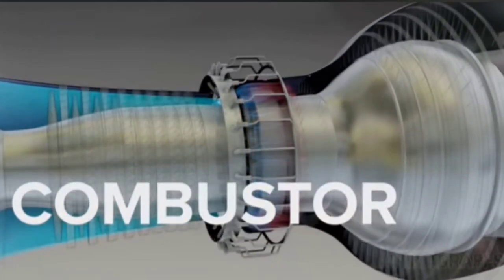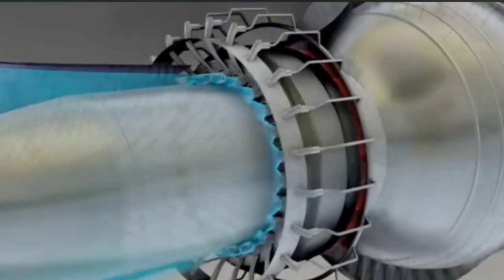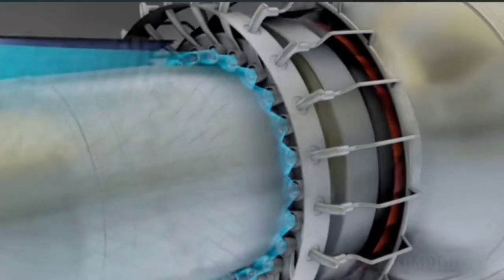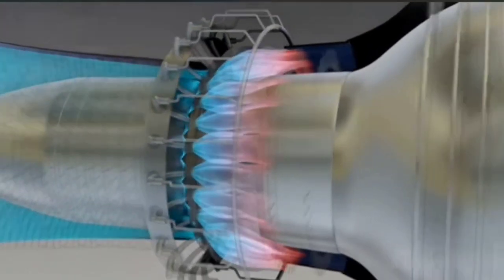Combustor. Air is mixed with fuel and ignited as it passes through the combustor, releasing a jet of super high-powered gas. The design shown here is an annular combustor, meaning ring-shaped.